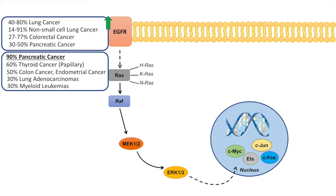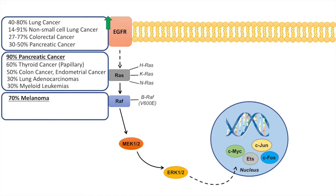Moving on to RAF: the BRAF V600E point mutation leads to a constitutively active form of BRAF. The most important cancer associated with this mutation is melanoma — about 70% of melanomas have a BRAF V600E mutation. About 50% of papillary thyroid cancers also have a mutation in RAF proteins, and about 10% of colon cancers have a RAF protein mutation as well.